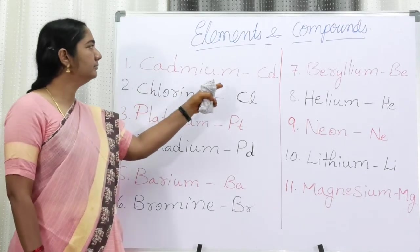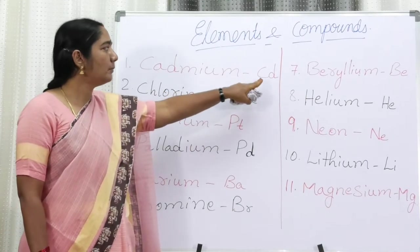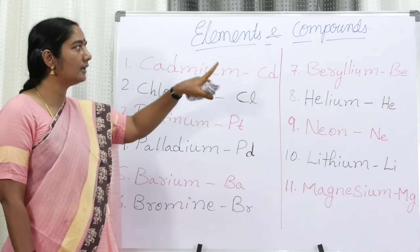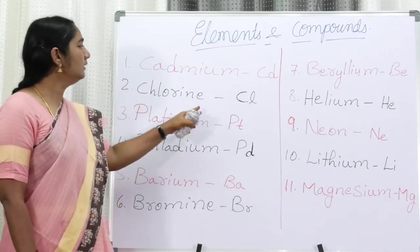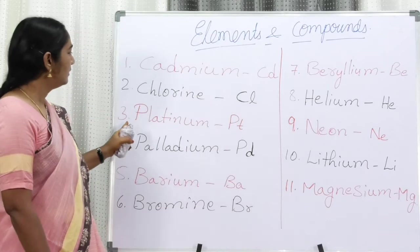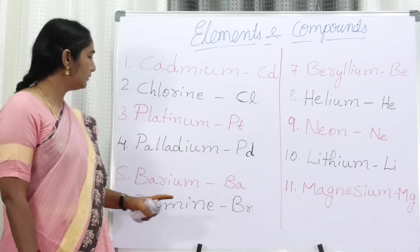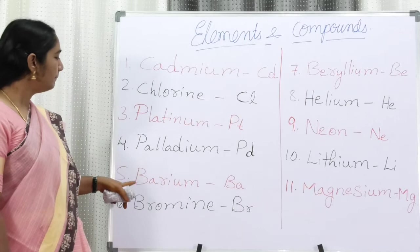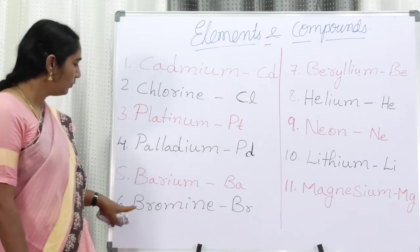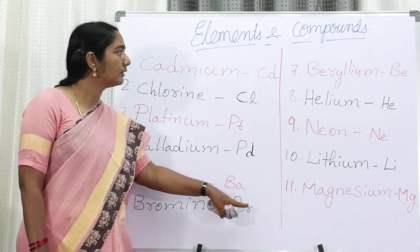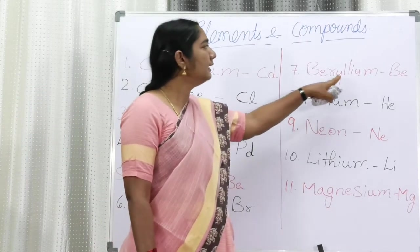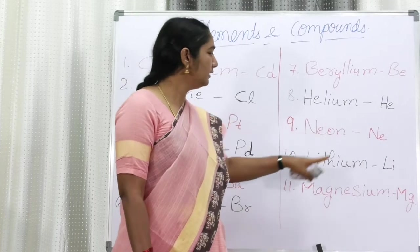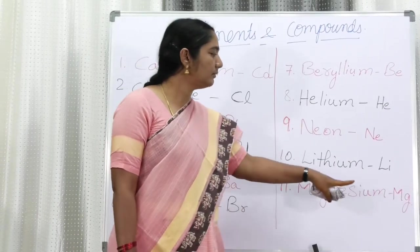Now for two-letter symbols: Cadmium — the symbol is Cd (capital C, small d). Always the first letter is capital and the second letter is small. Chlorine — Cl (capital C, small l). Platinum — Pt (capital P, small t). Palladium — Pd (capital P, small d). Barium — Ba (capital B, small a). Bromine — Br (capital B, small r). Beryllium — Be (capital B, small e). Helium — He. Neon — Ne. Lithium — Li. Magnesium — Mg.